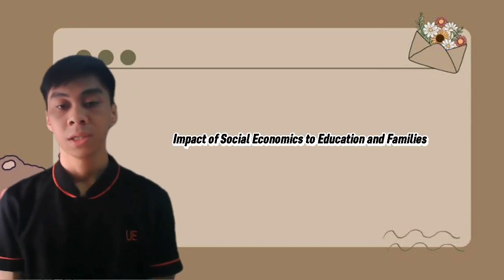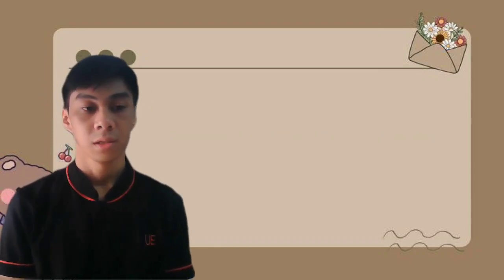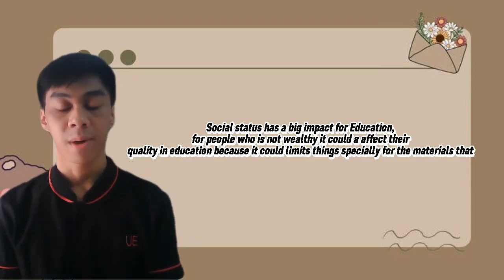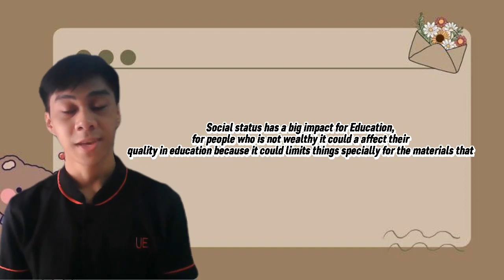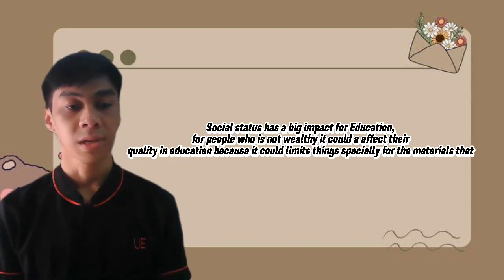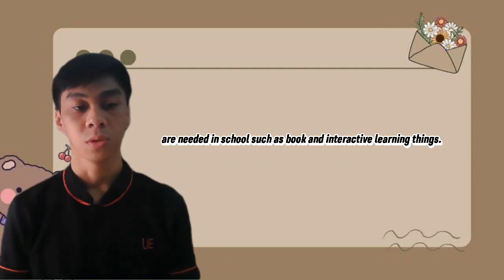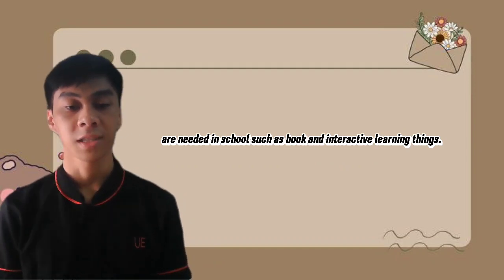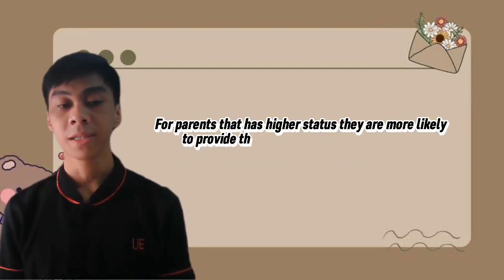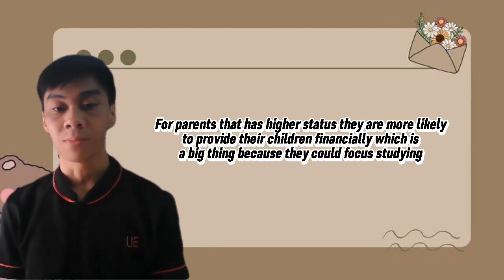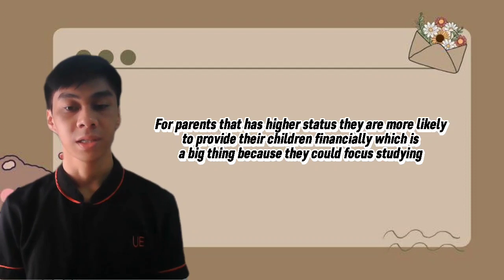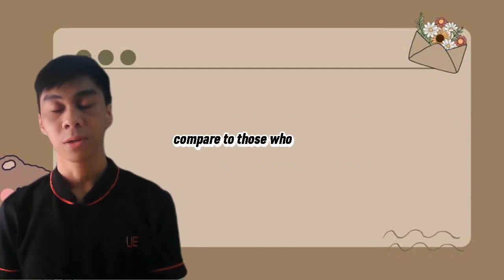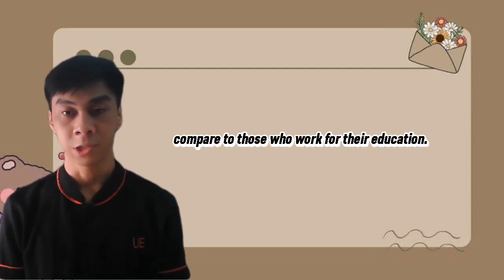The impact of social economics on education and families. Social status has a big impact on education. For people who are not wealthy, it could affect their quality of education because it could limit access to things, especially materials needed in school such as books and interactive learning tools. For parents that have higher status, they are more likely to provide for their children financially, which is significant because those children could focus on studying compared to those who have to work for their education.